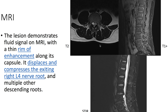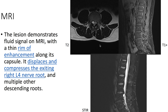On MRI, here T2-weighted imaging, we see that the lesion demonstrates fluid signal. On T1-weighted imaging with contrast, we see a thin rim of enhancement. The lesion also displaces and compresses the exiting right L4 nerve root, as well as multiple other descending nerve roots.